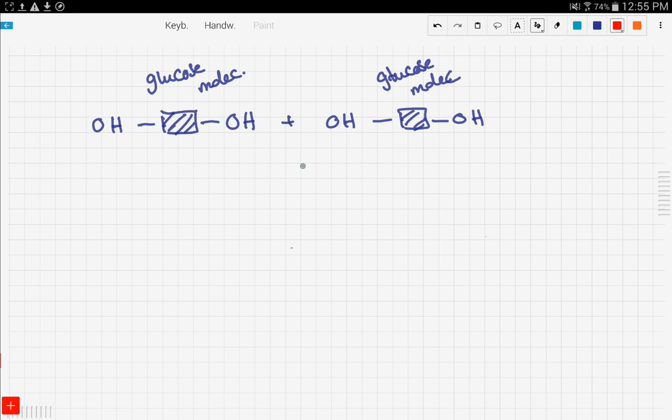Now, let's draw the products underneath. So what's gonna happen is this OH from the first glucose molecule is gonna react with the H from the other molecule to produce water. Now, that's our first product.